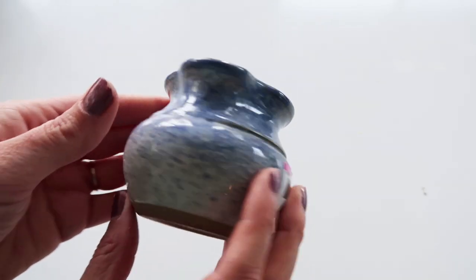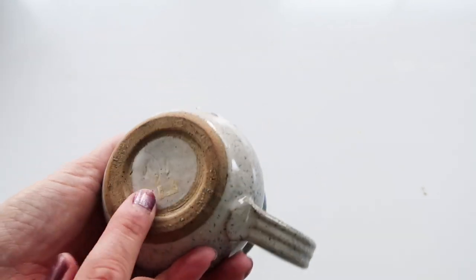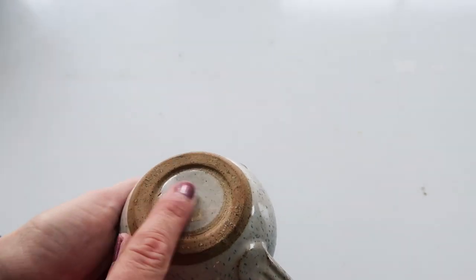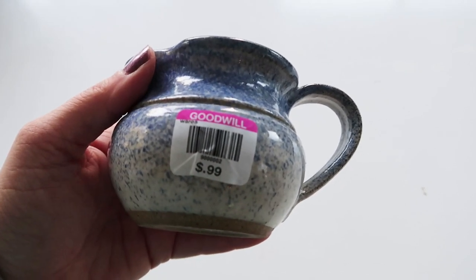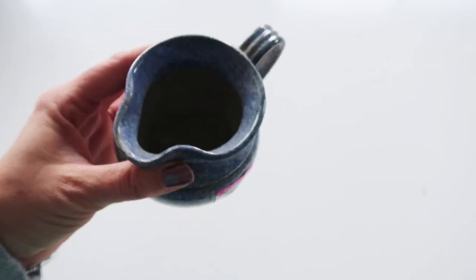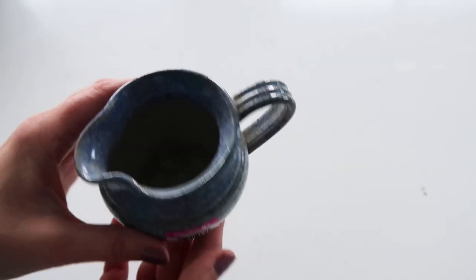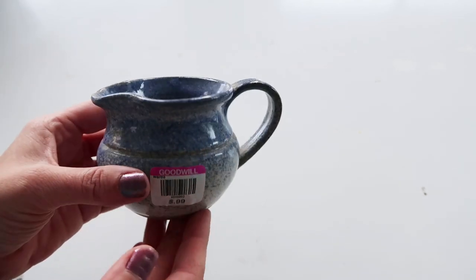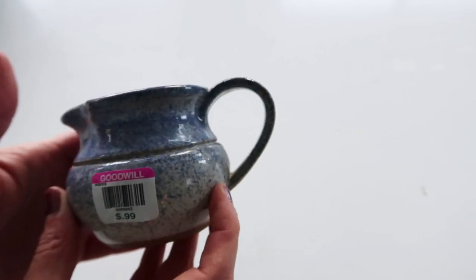So this will be the first little thing we start with today. I got this at Goodwill. I just thought it was really pretty and kind of unique. I don't know if it was handmade or from a store, but it was 99 cents and I thought this would be perfect as a little gift. You could add potpourri or flowers to it, but I'm going to turn it into a candle because I think that would be really cute to give to somebody.